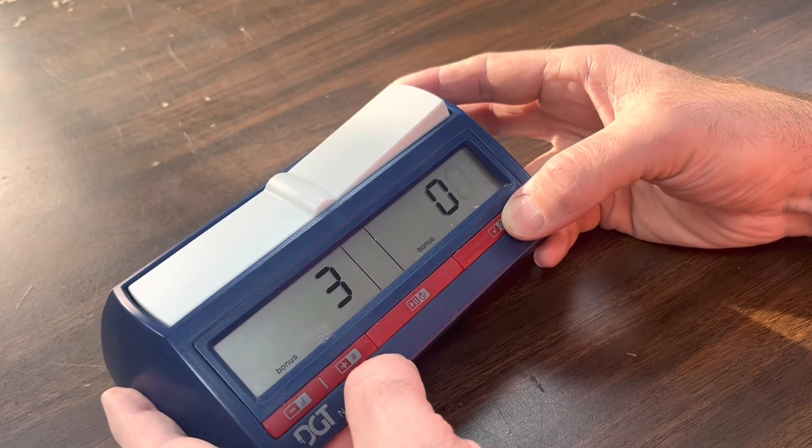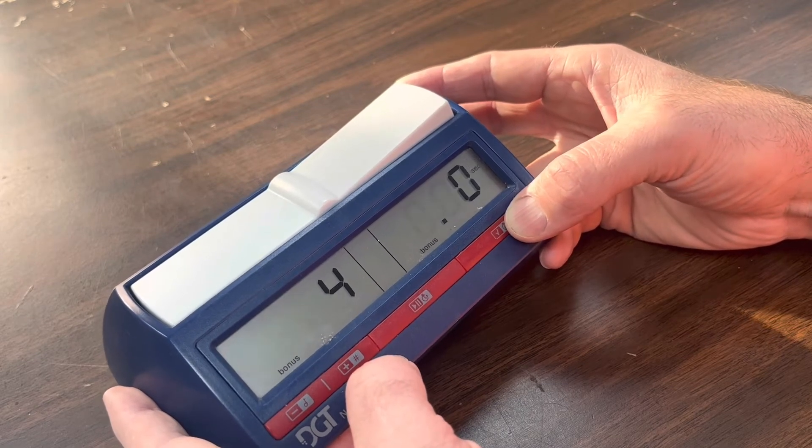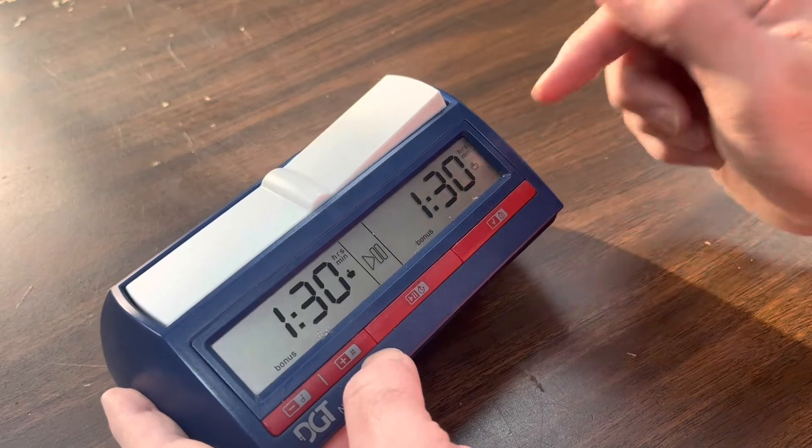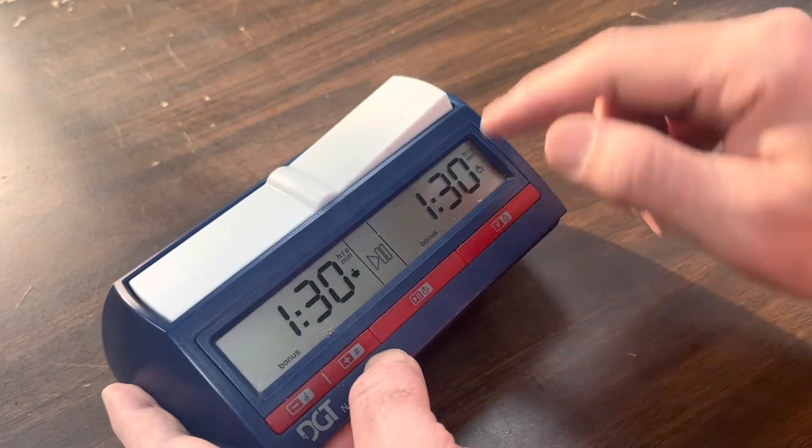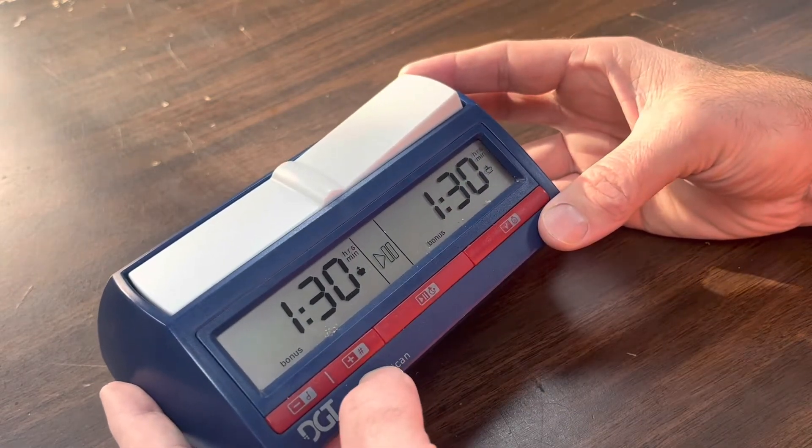So you just keep on hitting the checkmark button until you get back to the main screen. If you look, hour 30 with bonus time. So it's already set.